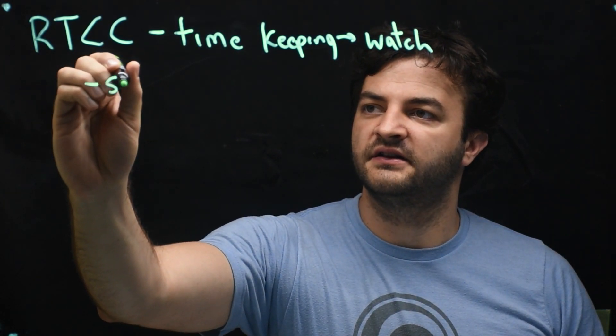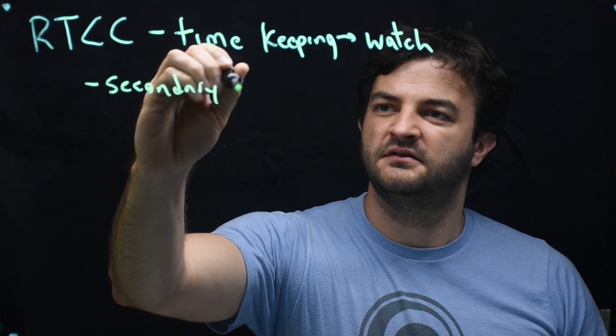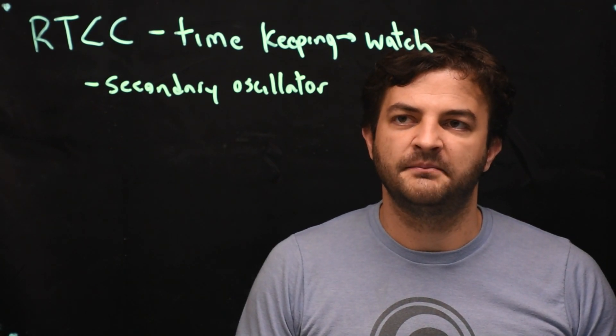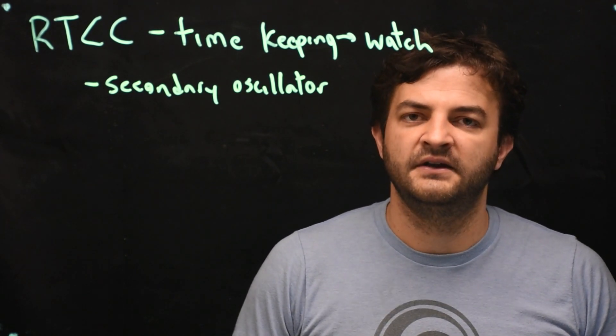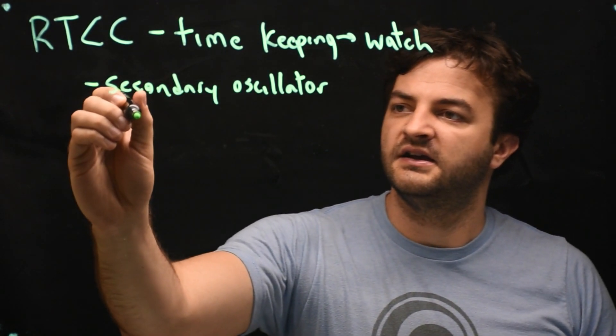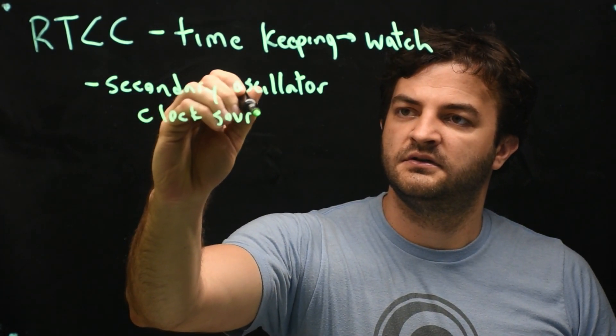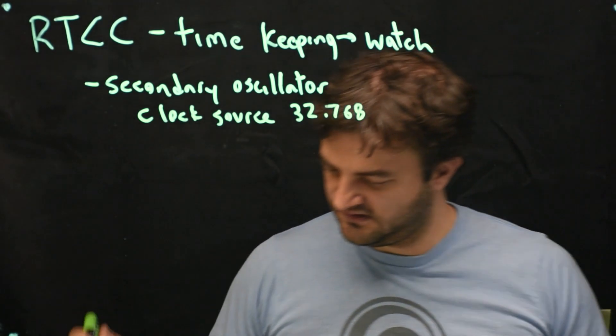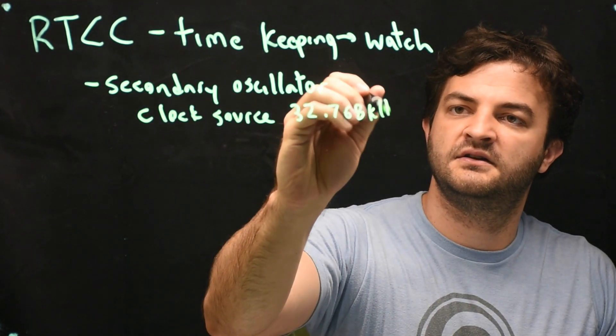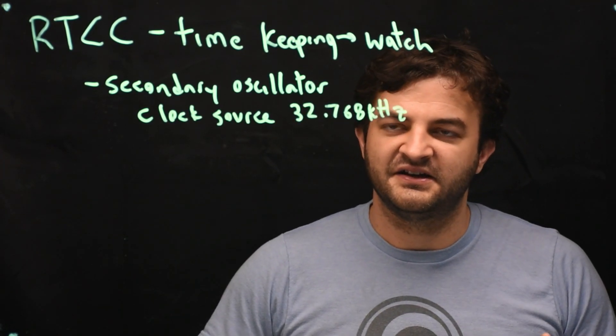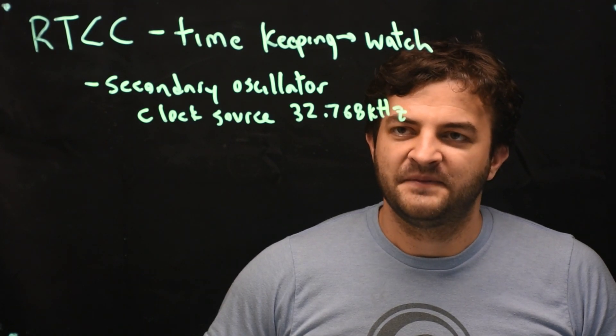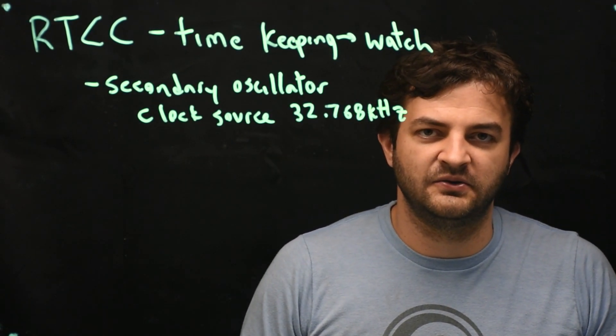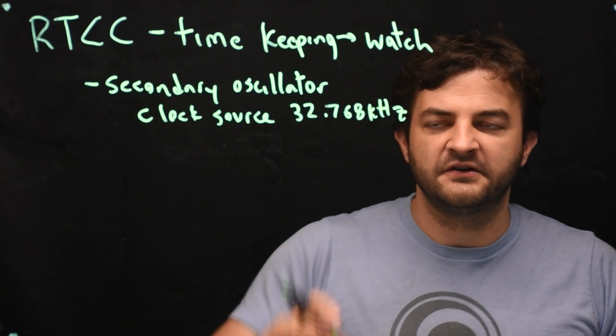We do this by using a secondary oscillator, one that's specifically timed to keep track of this level of time. So it's not nearly as fast as the 48 megahertz of the PIC itself. Instead it's going to use a clock source with a very specific frequency of 32.768 kilohertz, which is very strangely binary, so half of a 16-bit number. Something about this frequency counted up a thousand times gets you exactly one second. So it's a very specific frequency.